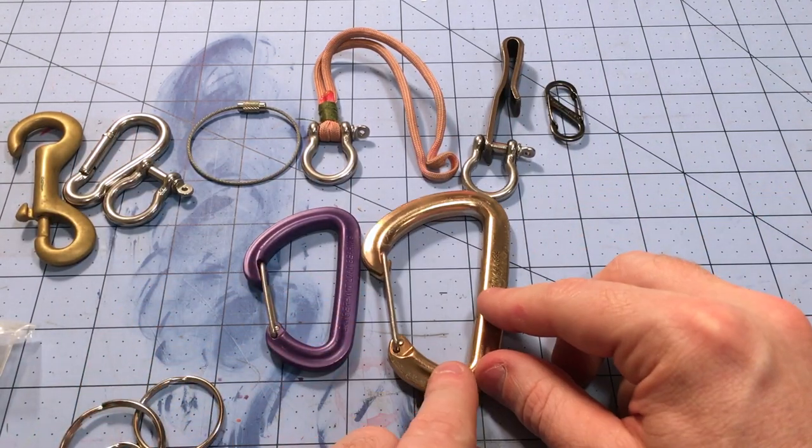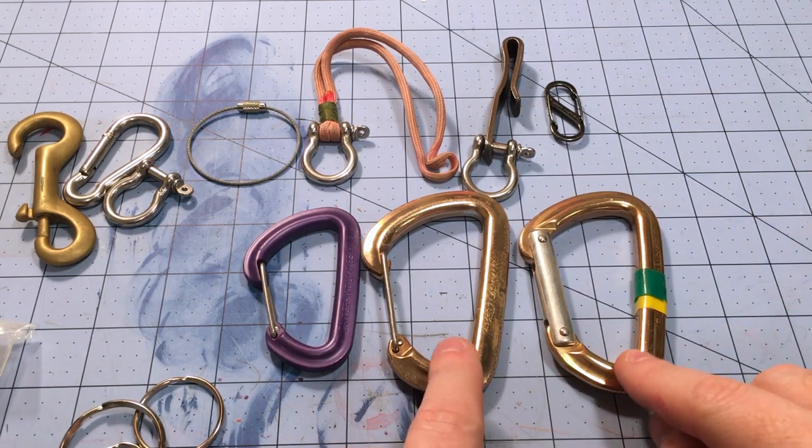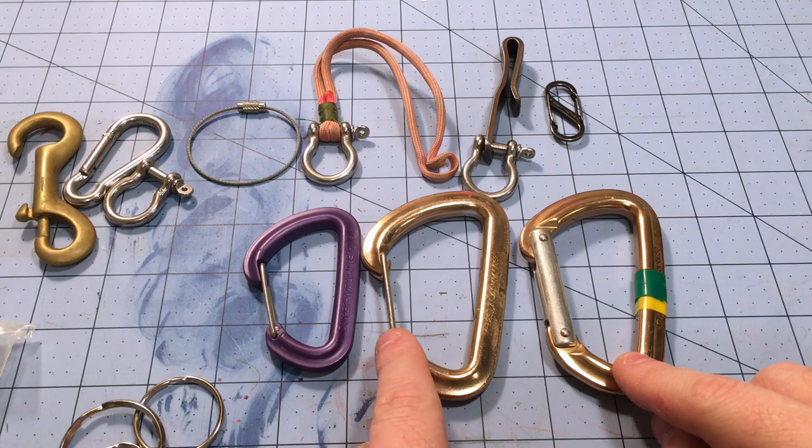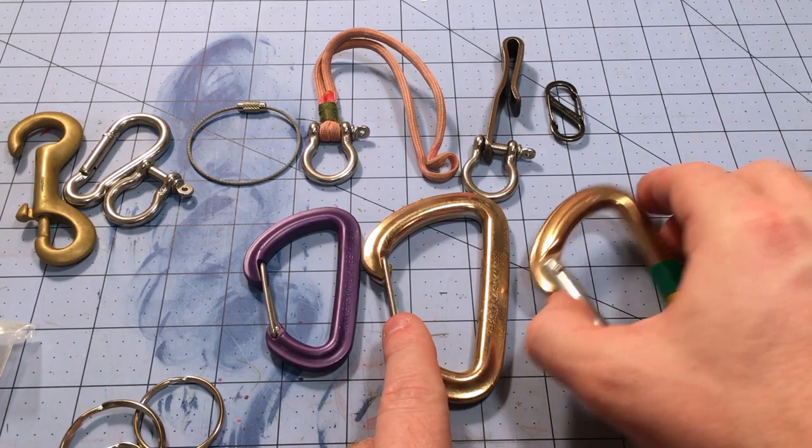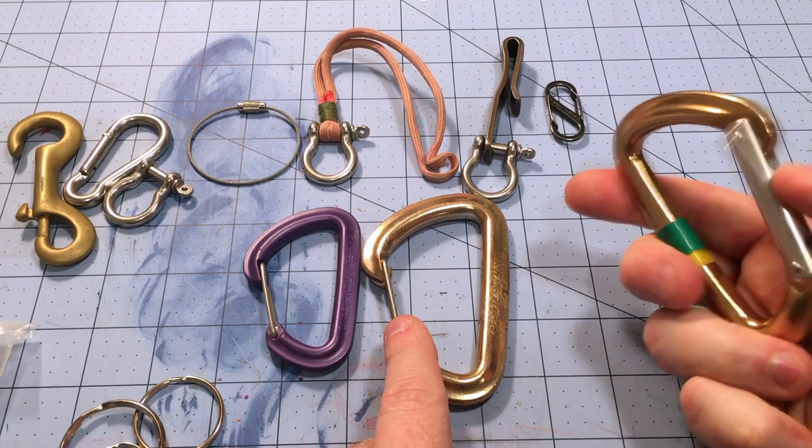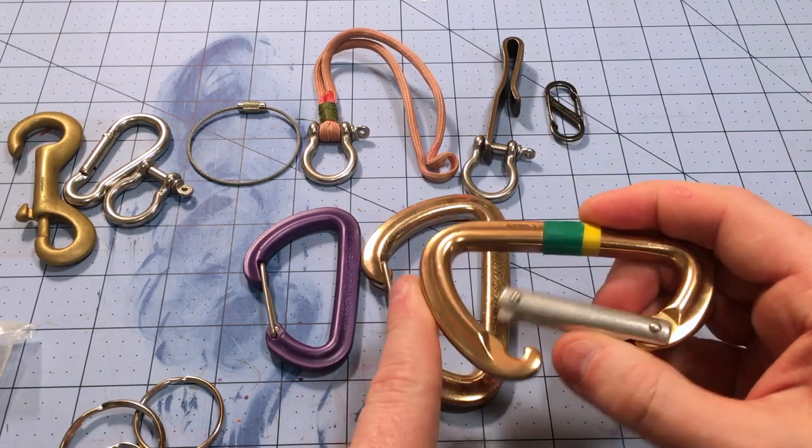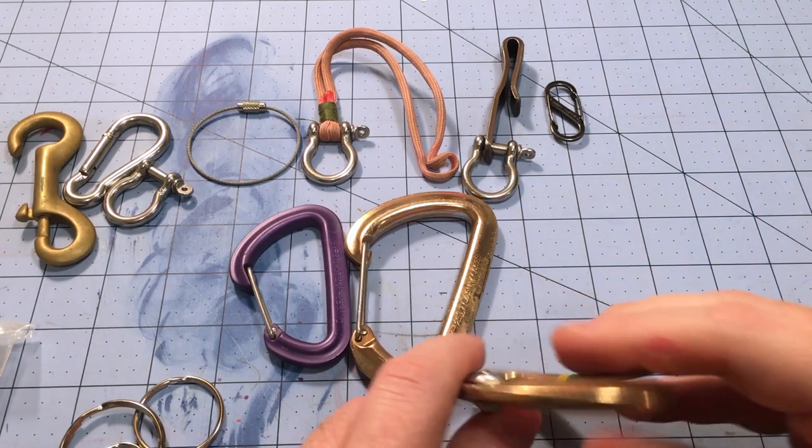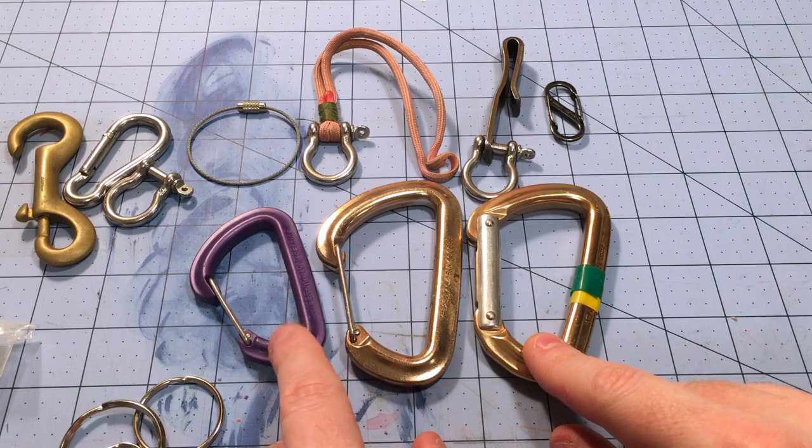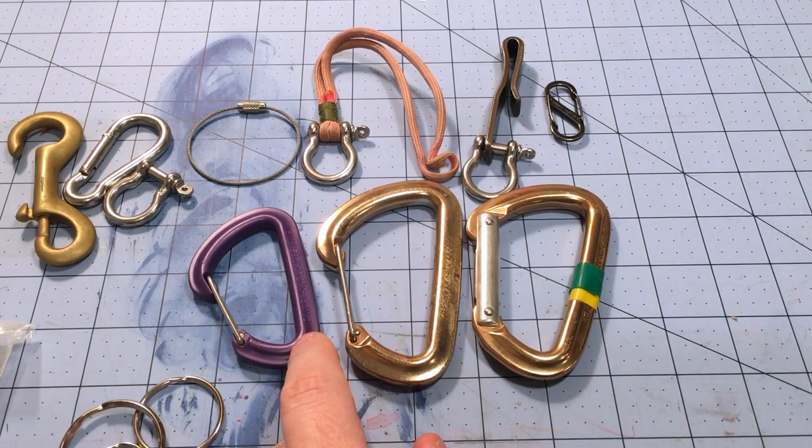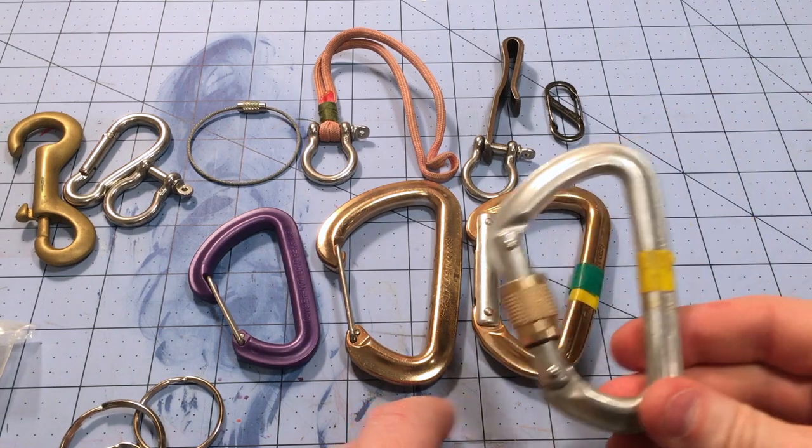You can compare that to its big brother actual climbing rated one or the solid gate version. These are basically the same thing. This will be lighter. I prefer wire gates myself, but old school can be cheaper. And for a non-critical load-bearing application like keys, this is way, way, way overkill still. So if you're trying to save a couple bucks, this guy, although these are pretty inexpensive.